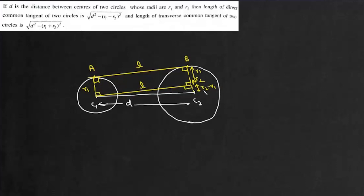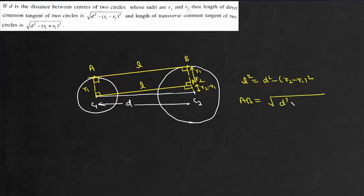Now this is a right angle triangle. So in this right angle triangle we can write: l² = d² − (r2 − r1)². Now this l is AB. From here we can write the length of direct common tangent AB = √(d² − (r1 − r2)²), which is what we need to prove in the first part.